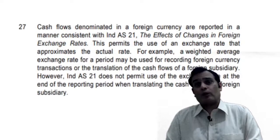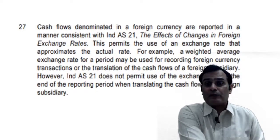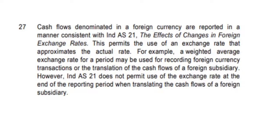On this, I'd also like to make a mention regarding what is given in paragraph number 27. Paragraph 27 says the cash flows denominated in a foreign currency are reported in a manner consistent with Ind AS 21. That means Ind AS 21 allows you to use a rate which is supposed to be an average rate if it approximates the actual rate — meaning we could take a weighted average exchange rate and apply that to all transactions in that particular period.